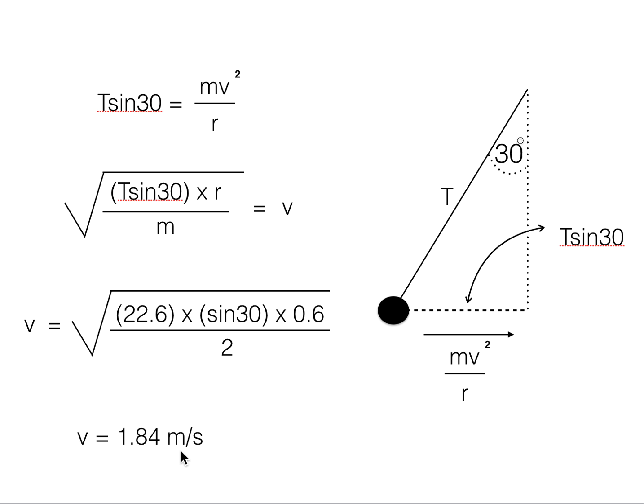Now before I end, I'll just recap the key points to remember when solving these questions. The resultant vertical force is always zero, and the centripetal force directed towards the centre of the circle is equal to mv squared over r. Thanks for watching, and I hope you found this video useful.